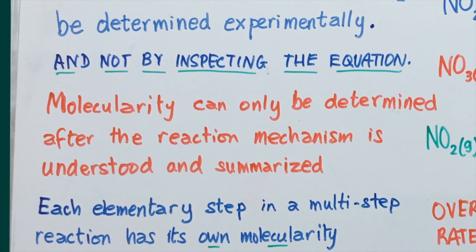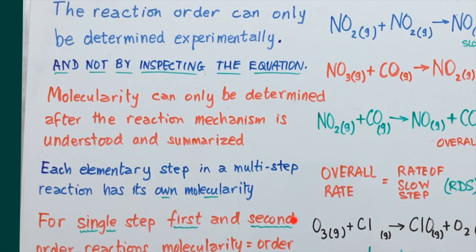Molecularity refers to the number of molecular entities that must collide in a particular step of a reaction. So when hydrogen peroxide decomposes into water and oxygen, it's just one molecular entity — a unimolecular reaction. Each elementary step in a multi-step reaction has its own molecularity. But for single-step first and second order reactions, we can easily say that molecularity is always equal to order.